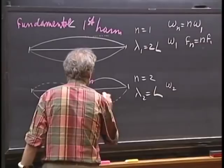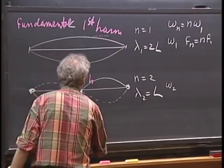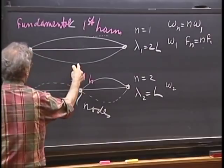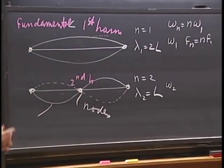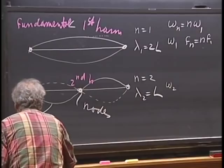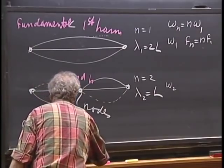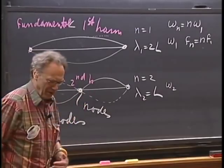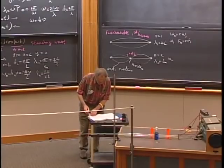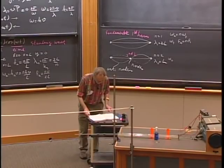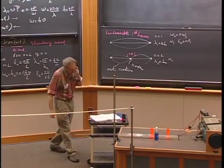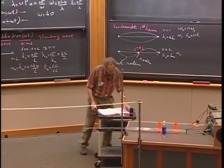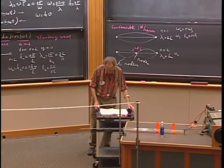The points that never move are called nodes; the ones with the largest amplitude are called antinodes — in Dutch we call them 'buike,' meaning tummies. The boundary condition leads to discrete resonance frequencies. In quantum mechanics, we would call these eigensolutions and eigenstates.